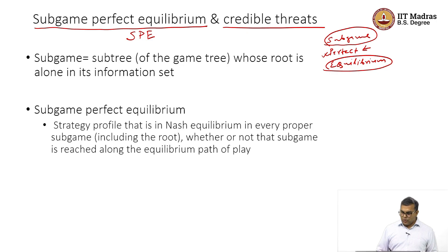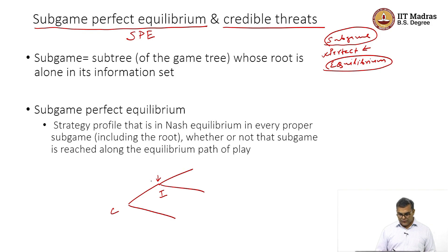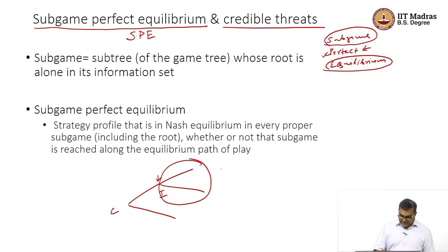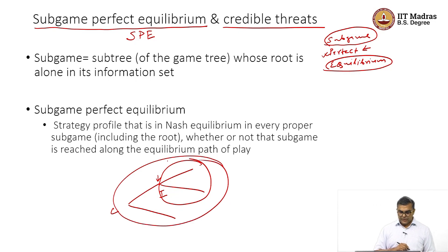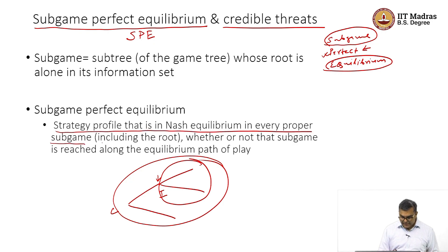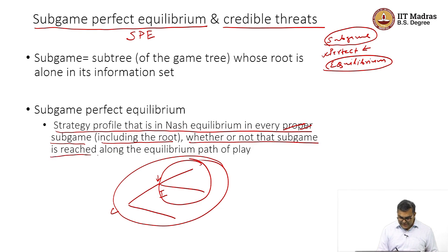What is a subgame? In the entry game with challenger and incumbent, this node can be thought of as a new beginning — a new game is starting here. So this can be treated as a subgame, a game in itself that follows all the properties of a game. There is also another subgame starting at the root. A strategy profile that is a Nash equilibrium in every subgame, including the root, whether or not that subgame is reached along the equilibrium path of play, is a Subgame Perfect Equilibrium.